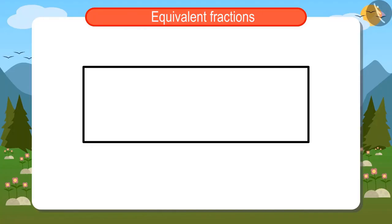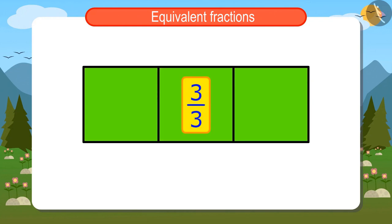For 3 upon 3 I have to divide this rectangle into three equal parts. Now three of these three parts will represent 3 upon 3.